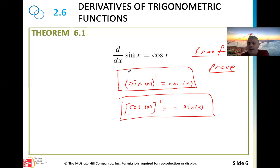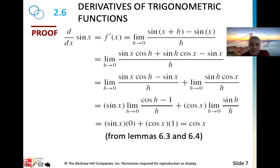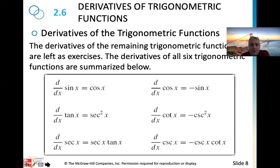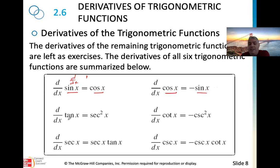One more time: we are memorizing that the derivative of sine of x is cosine of x, and the derivative of cosine of x is negative sine of x. This is provable using the limit definition, but for now let's just memorize it. The notation d/dx means 'the derivative of', same as the prime notation.